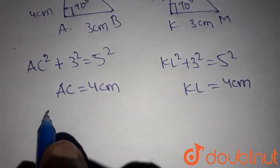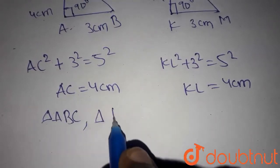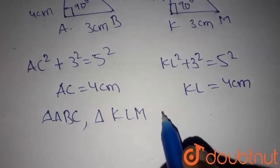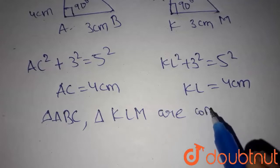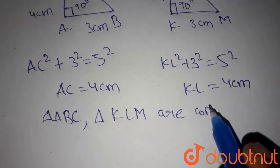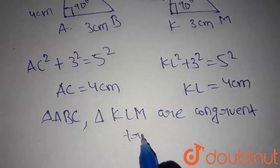Then triangle ABC, triangle KLM are congruent triangles.